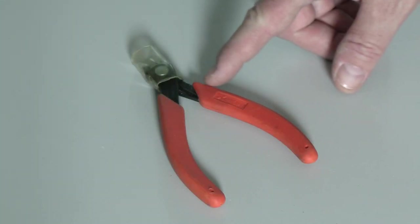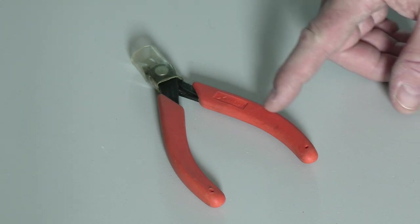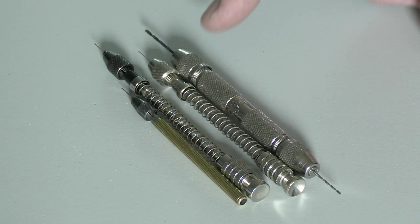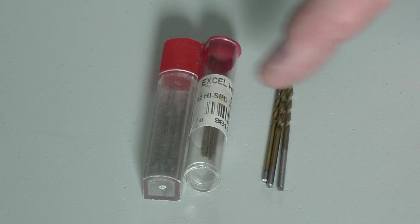This is a set of sprue cutters, really good for removing small parts from the parts trees without damaging them. These should only be used on plastic or other soft materials. I brought several pin vices with different sized drill bits, plus some additional drill bits that are a little larger.